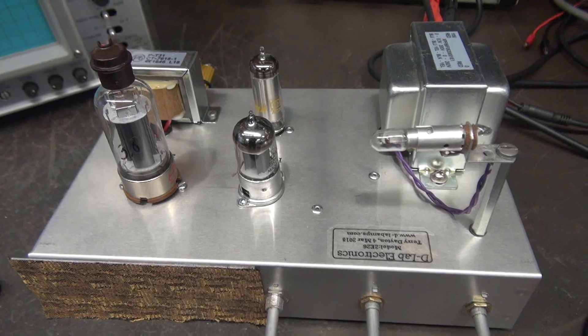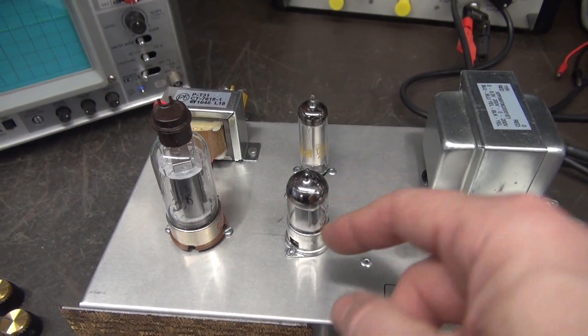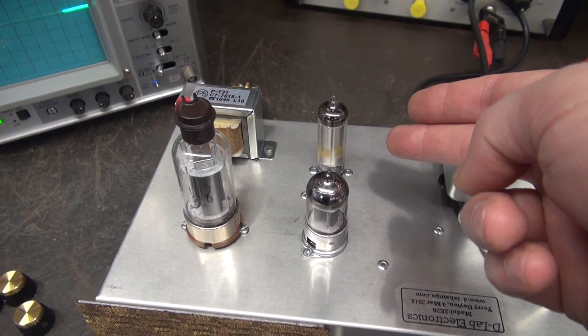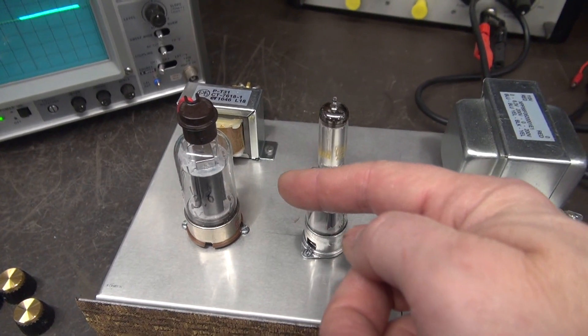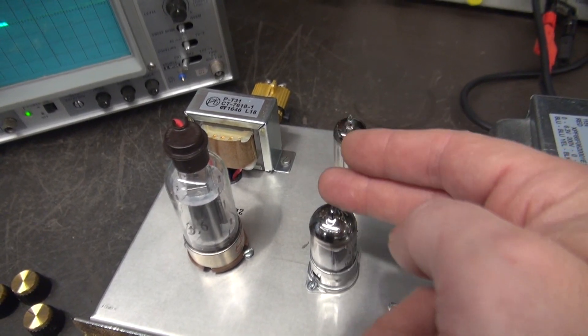So here is the second 2E26 amp. Same lineup: 12AX7, OA2 regulator tube, and of course the 2E26, 8 watt single-ended type output transformer.